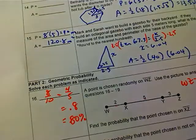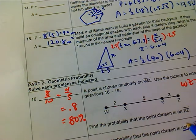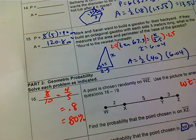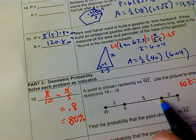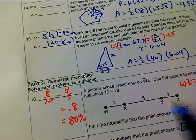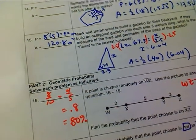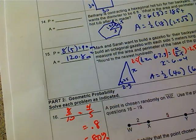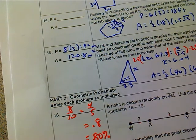Now, find the probability it's not on XY. Well, XY is 5. So what's not XY? Well, it's this part and this part. So that's also 5. So this is going to be 5 out of 10 or 1 half.